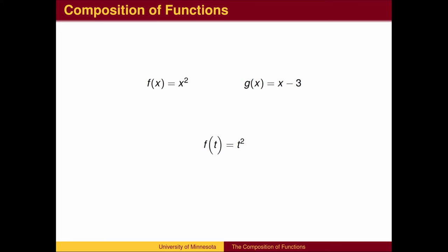We could use a different variable, or just indicate it with a spot, or use a different color. The input to the function f is the output of the function g, which is x minus 3. So we replace the input to the f function with x minus 3.